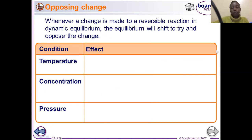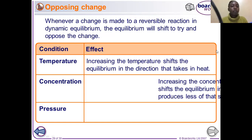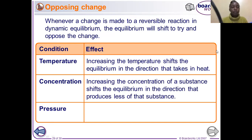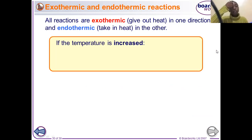Here is a summary of those factors: increasing temperature shifts the equilibrium in the direction that takes in heat. Increasing concentration shifts the equilibrium in the direction that produces less of that substance. Increasing pressure shifts the equilibrium in the direction that produces fewer gas molecules.